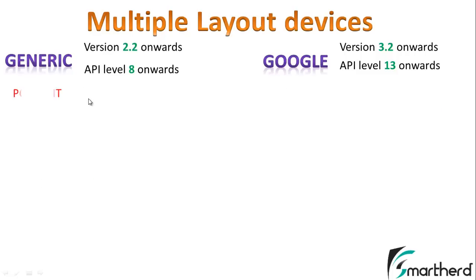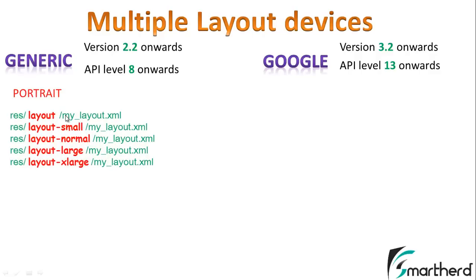For generic phones, for portrait mode, we store layouts in the respective folder. By default, Eclipse IDE creates a default layout folder where you store your myLayout.xml. Apart from the layout folder, you have to manually create layout-small, layout-normal, layout-large, and layout-xlarge folders in your Android application project, and design a layout for each of these device sizes.